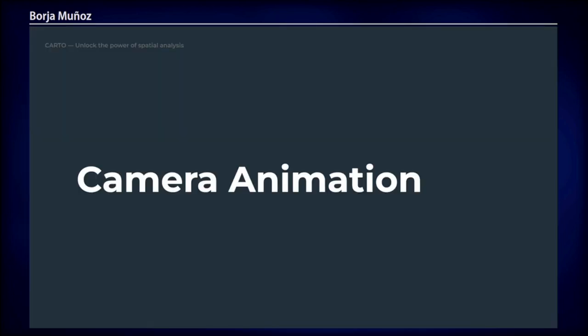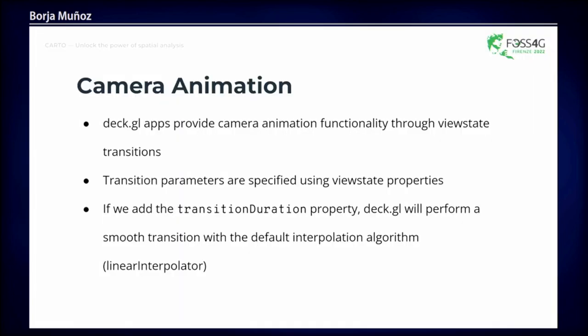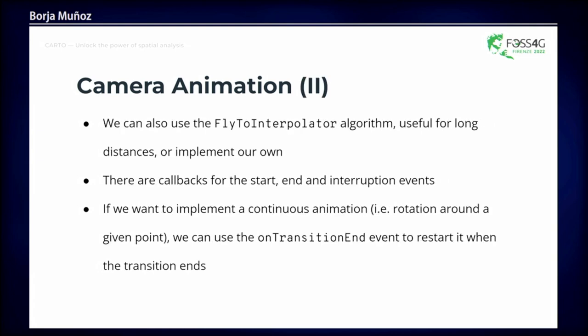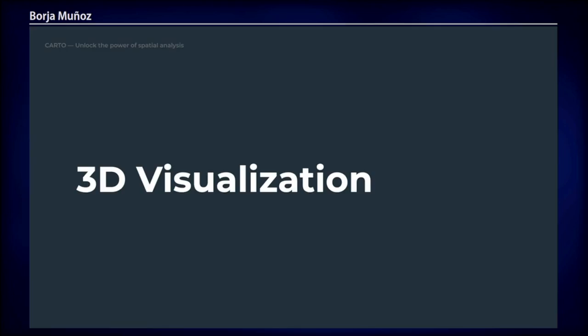For camera animation, DeckGL uses view state transitions. You simply set the transition_duration property in the new view state to define how long it takes to move between view states. There are different interpolation algorithms, including a linear interpolator and a fly-to interpolator that draws an arc with the camera. You can also listen to events generated by the transition.